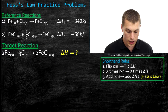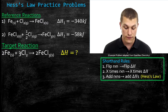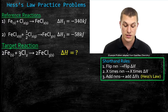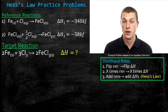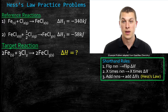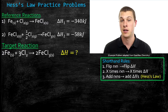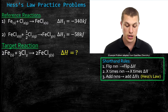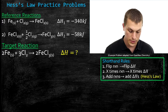We are going to look carefully at our reference reactions, and we're going to make sure that the numbers in our reference reactions, when we add them together, for each of the reactants and products, are going to match what's in our target reaction. We're also going to want to check and make sure that our reactants and products are on the correct side in our reference reactions, so that when we add them up, they'll give us our target reaction.